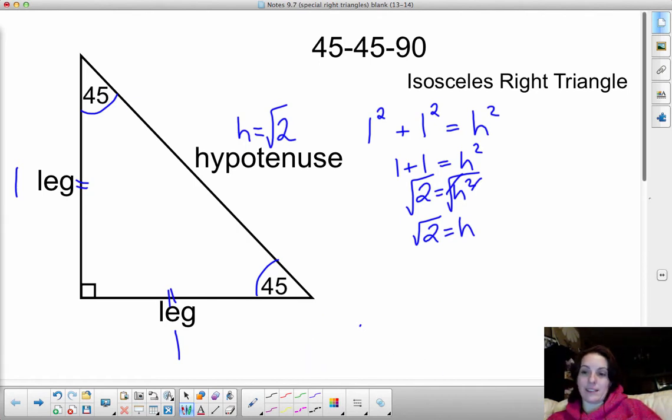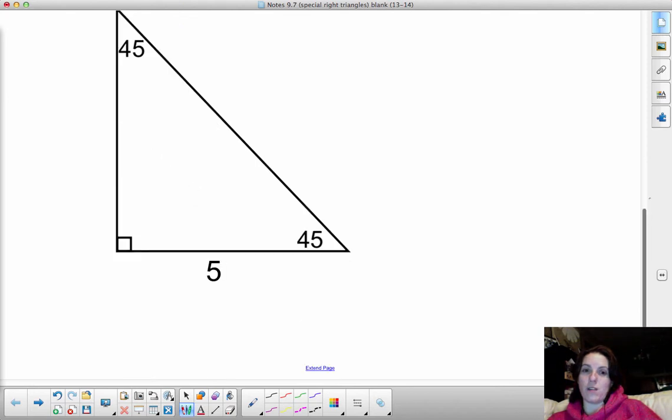So I'm going to ask to use your Pythagorean theorem one more time on this problem. What if you have a 45-45-90 triangle, except now, instead of having a leg of one, you have a leg of five. What's the length of the hypotenuse now? Pause it, work it out with the Pythagorean theorem, and then come back so we can draw some conclusions.